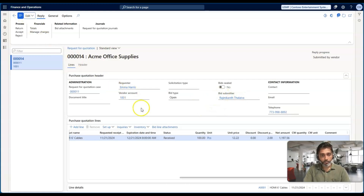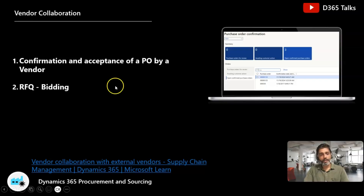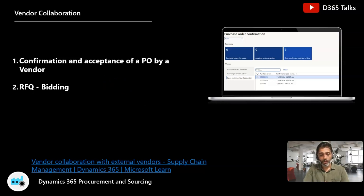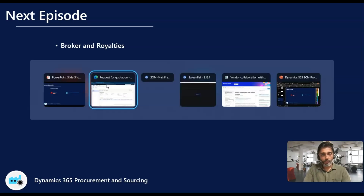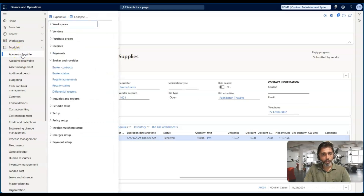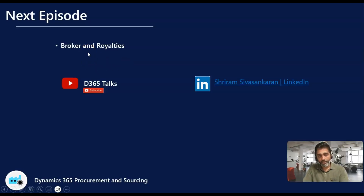That brings us to the end of this episode. There are many more scenarios to explore in the vendor collaboration portal, such as invoicing and consignment inventory. You can practice by logging in as Contoso Entertainment USA and then switching to a vendor user. In the next episode of our Procurement Sourcing series, we will cover broker and royalties capabilities in Dynamics 365 Finance and Operations. Make sure you subscribe to the channel D365 Talks or follow my profile on LinkedIn. Thank you.